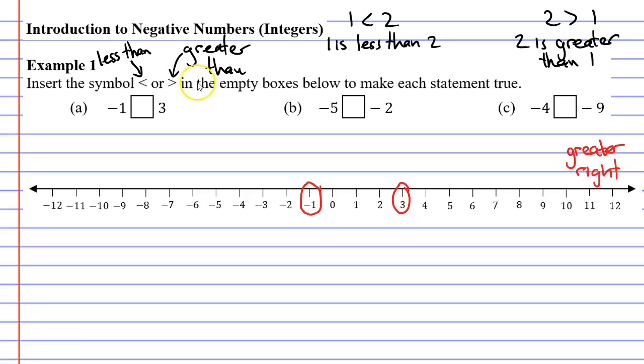And the numbers that we would refer to as being less than other numbers are further to the left. Alright, so which one is greater, negative one or three? Well, three is the greater number. So, we're going to say negative one is less than three.